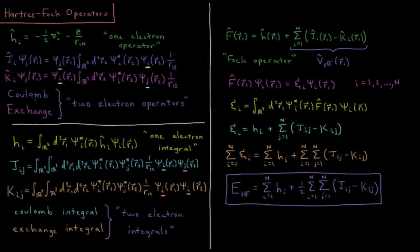The Coulomb and exchange operators are both two-electron operators — they depend simultaneously on the position of two electrons, r1 and r2. These operators give us different expectation values once we take that operator acting on a wave function, multiply it by the complex conjugate, and integrate.